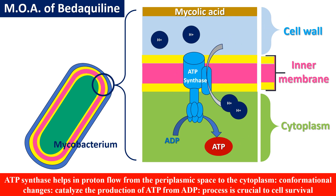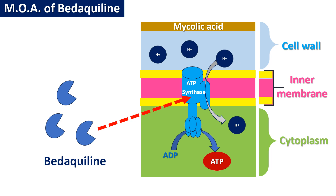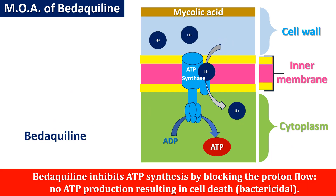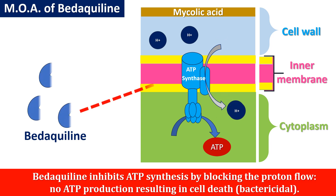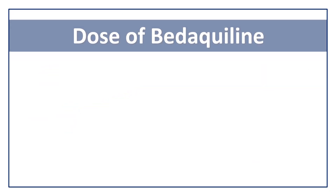The flow of protons through ATP synthase helps in the generation of ATP — ADP is converted into ATP. When Bedaquiline is administered, it acts on ATP synthase and blocks further generation of ATP from ADP. This means Bedaquiline inhibits ATP synthesis by blocking proton flow, resulting in no ATP production and ultimately the death of the mycobacterial cell.